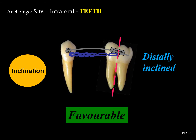A distally inclined tooth, on the other hand, offers a favorable anchorage unit. If you want to retract the canine into the extraction space, even though there will be some mesial inclination of the molar, that is a positive result. To summarize: a distally inclined tooth provides a more favorable anchorage outcome compared to a mesially inclined tooth.